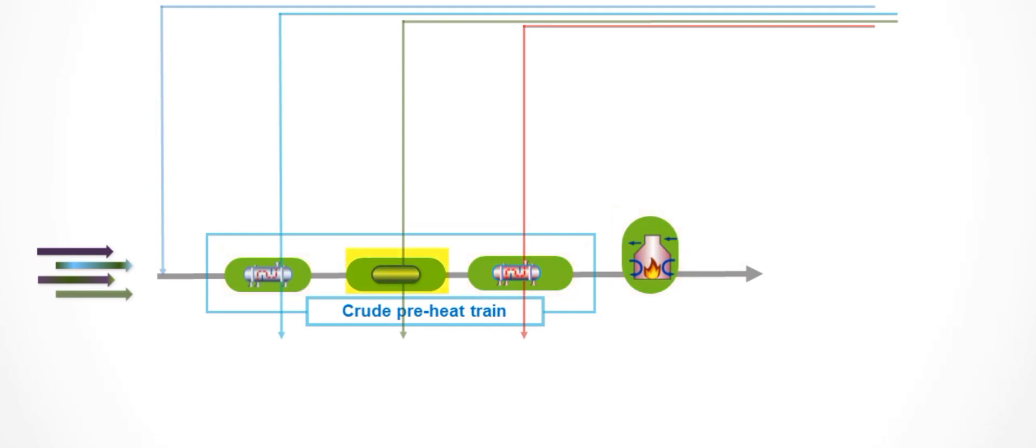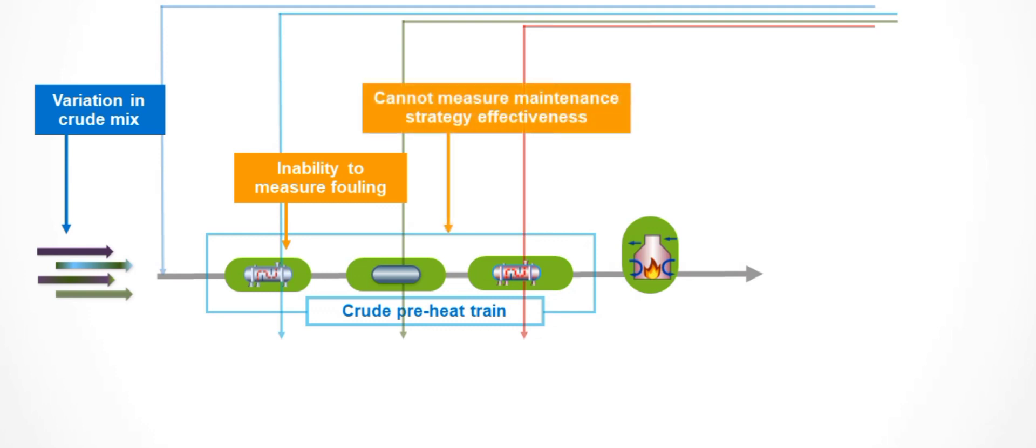The challenges in operating a preheat train start with variation in the crude feed into the refinery, followed by an inability to physically measure fouling in real-time in the plant. This inability to directly measure fouling and fouling rates makes optimization difficult.